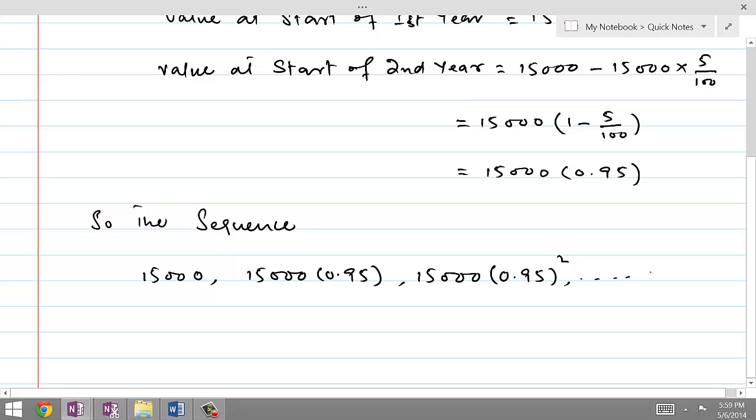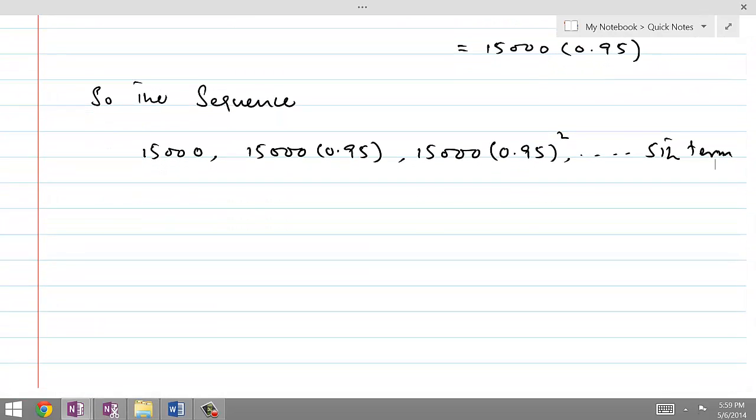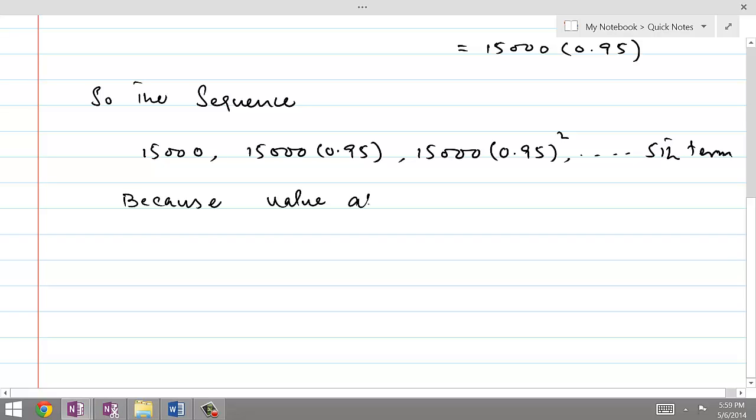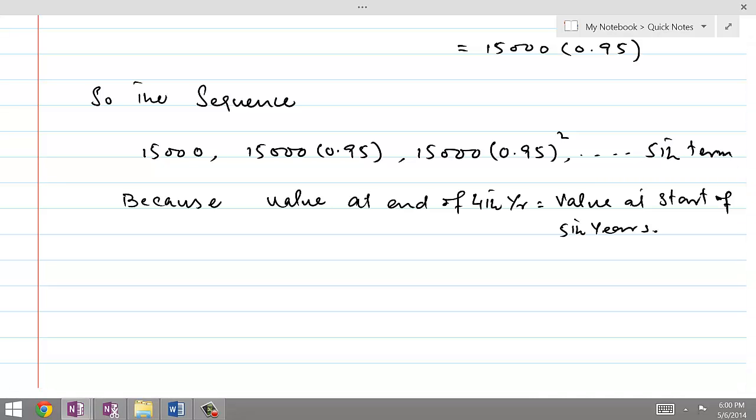What we are required is to find the fifth term. Because value at end of fourth year is equal to value at start of fifth year, that's why we need the fifth term of the sequence. Because $15,000 was the first value taken at the start of year, that's why we are taking sequence at starts of year.